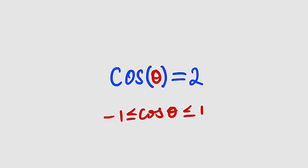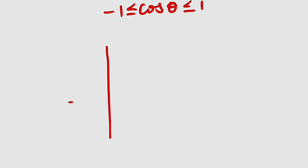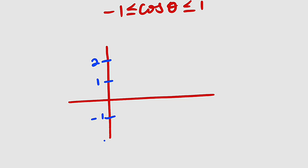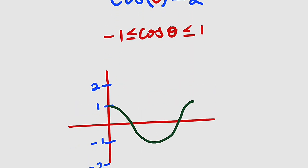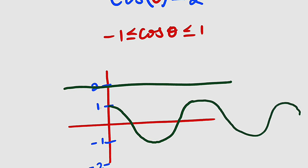Another way to confirm this equation has no real solution is by graphing. We can graph the left-hand side and the right-hand side and see whether they intersect. On the y-axis we have 1, 2, negative 1, negative 2. The graph of cosine theta oscillates such that the maximum height it can attain is positive 1 and the least is negative 1. The right-hand side is y = 2, a horizontal line. These two graphs will never intersect — the cosine stays between 1 and negative 1, so they will never meet.